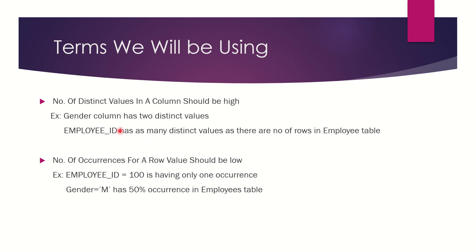Similarly, let's assume the gender column in the employees table, which has only two distinct values — male and female. Now if I fire a query like SELECT * FROM employees WHERE gender = 'M', it will qualify for almost 50% of the rows, and hence will take more time to execute. So the rough estimate says that we should be starting with such a column in the WHERE part of the clause which has a high number of distinct values.